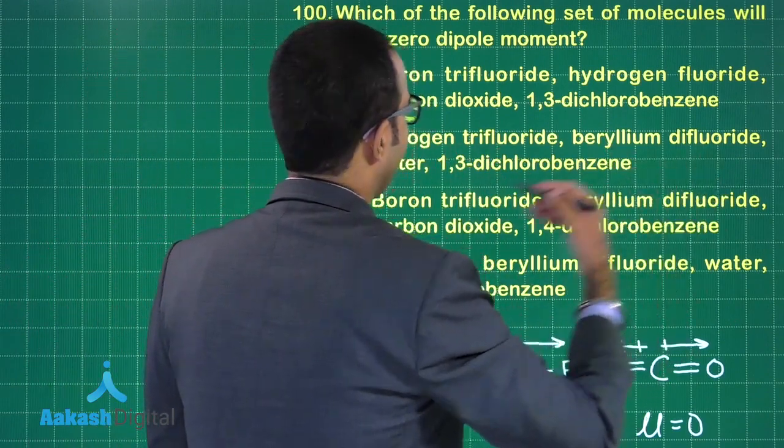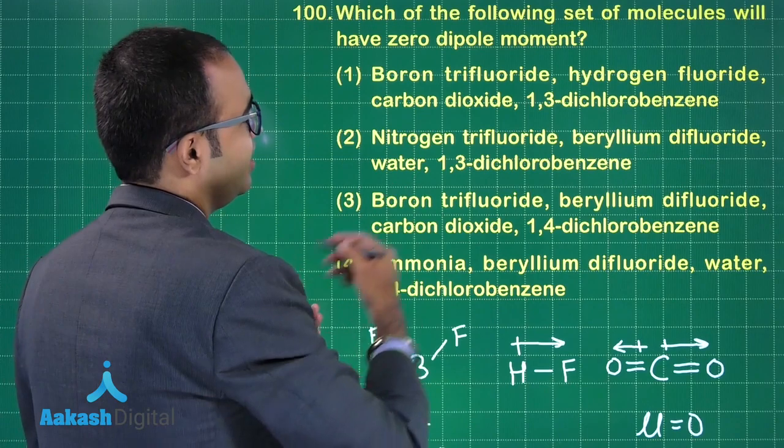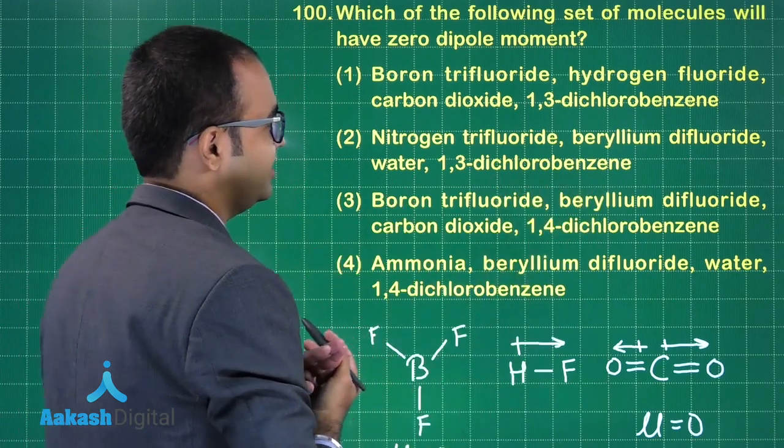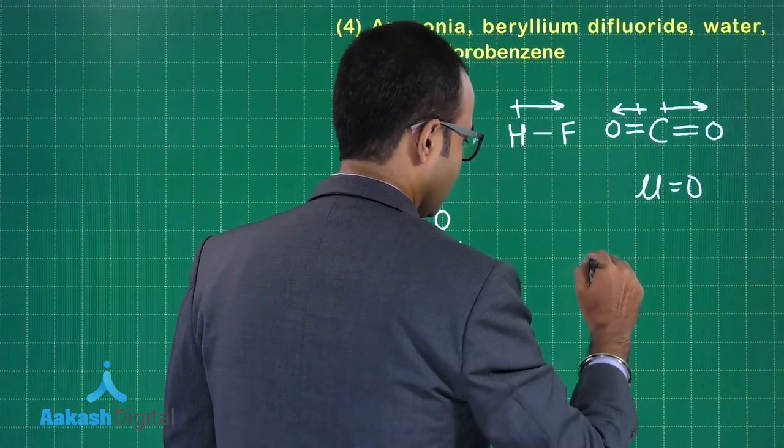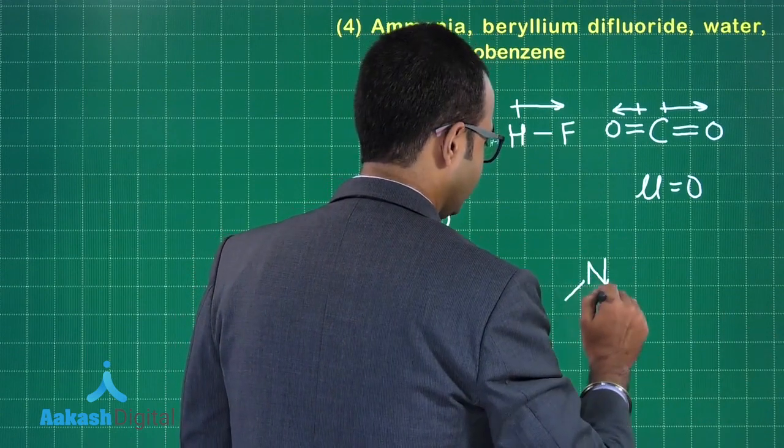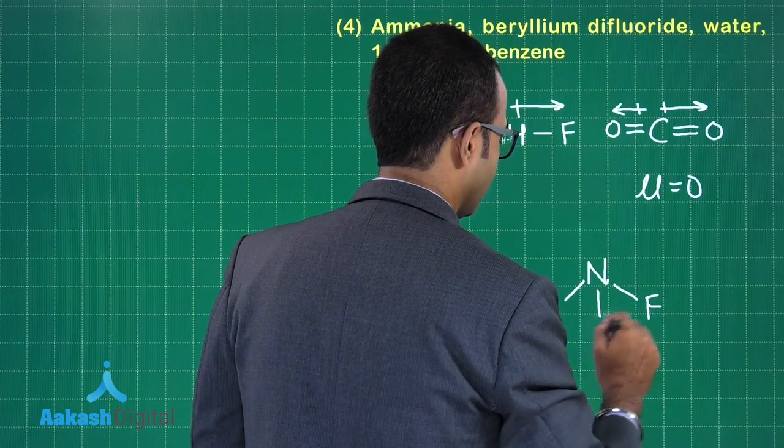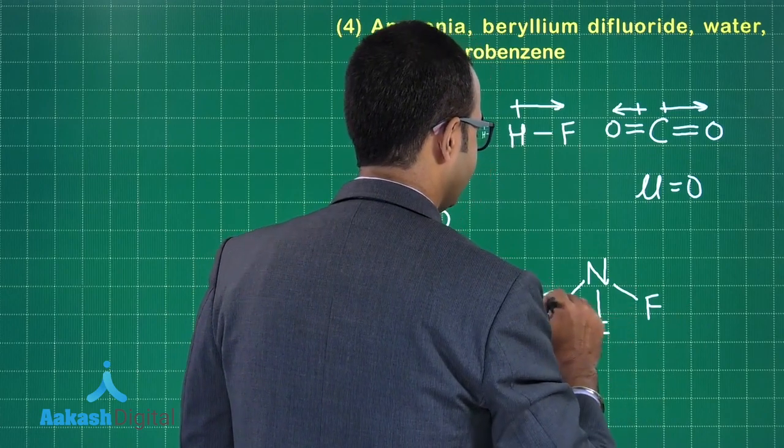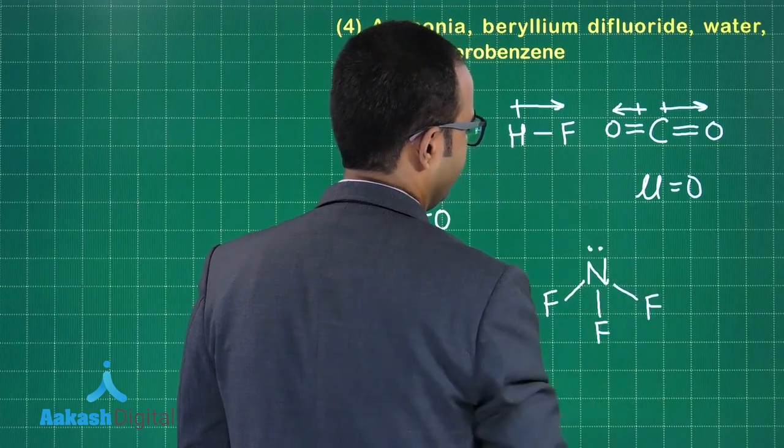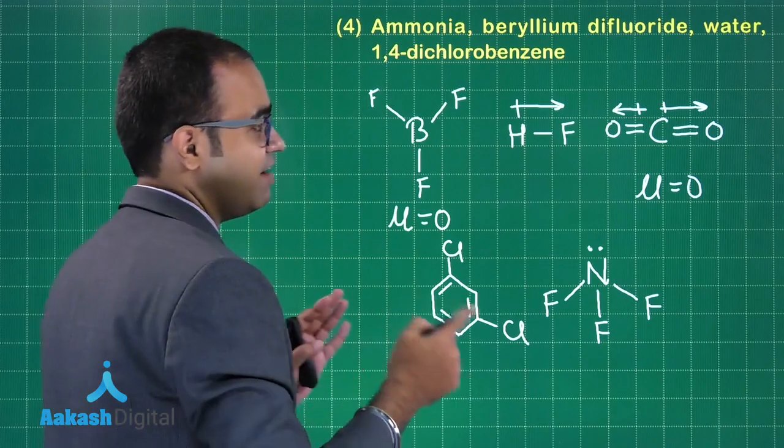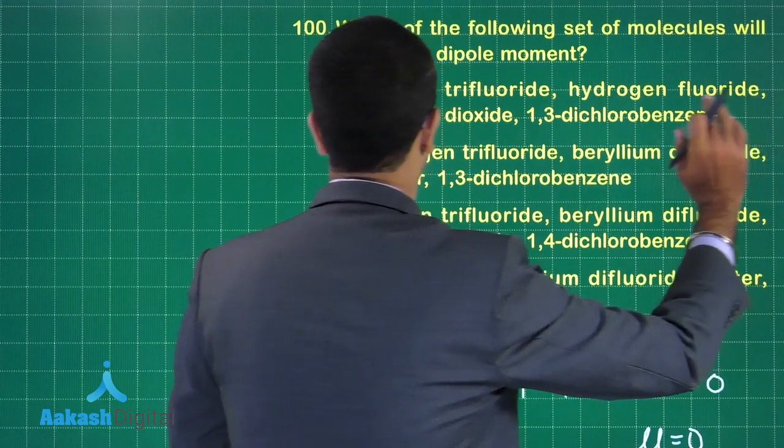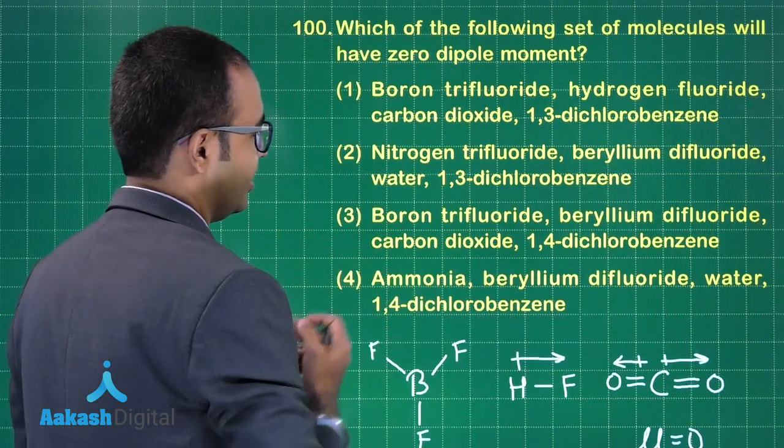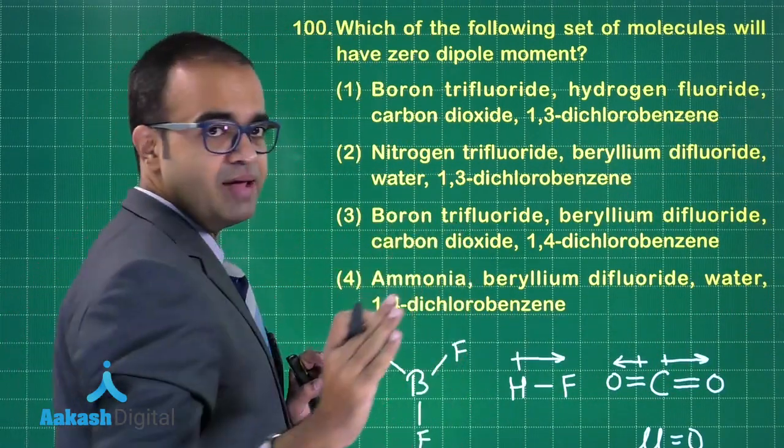Let us look at the second: nitrogen trifluoride, beryllium difluoride, water, again 1,3-dichlorobenzene. So nitrogen trifluoride, what will be nitrogen trifluoride? Nitrogen connected to three fluorine atoms and there is a lone pair. So this will not have a zero dipole moment, so second one is also not our answer.